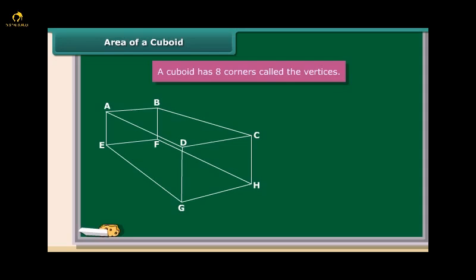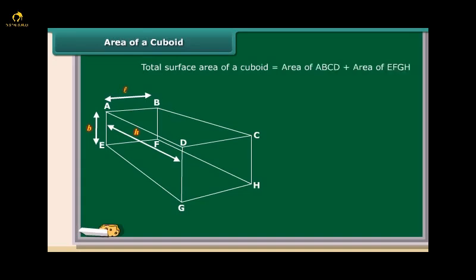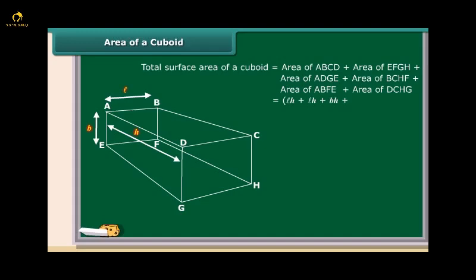A cuboid has 8 corners called vertices: A, B, C, D, E, F, G, and H. Let AB be L, AE be B, and AD be H. Then the total surface area of the cuboid equals the sum of the areas of the 6 faces: LH + LH + BH + BH + LB + LB. Therefore, total surface area of a cuboid is equal to 2 into (LB + BH + HL).